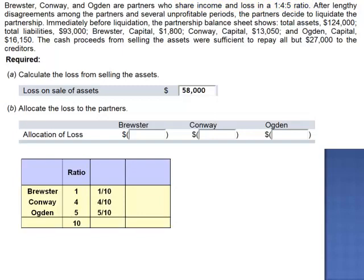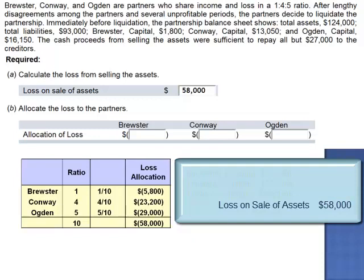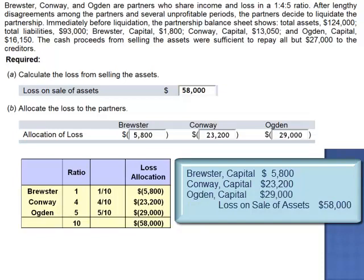1 tenth, 4 tenths, and 5 tenths will be used to allocate the loss. 1 tenth of negative $58,000 is negative $5,800. The loss will be allocated $5,800 to Brewster, $23,200 to Conway, and $29,000 to Ogden.